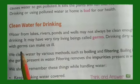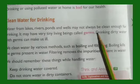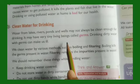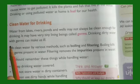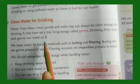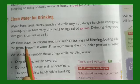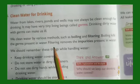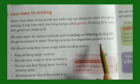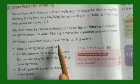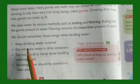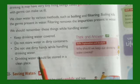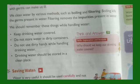Drinking or using polluted water at home is bad for our health. Clean water for drinking: Water from lakes, rivers, ponds, and wells may not always be clean enough for drinking — it may have very tiny living beings called germs. Drinking dirty water with germs can make us ill. We clean water by boiling and filtering. Boiling kills the germs; filtering removes the impurities. We should keep drinking water covered, not store it in dirty containers, not use dirty hands while handling it, and store it in a clean place.